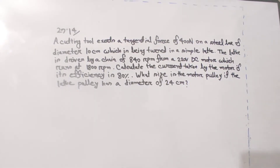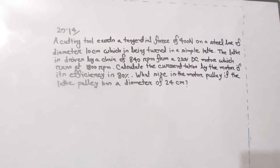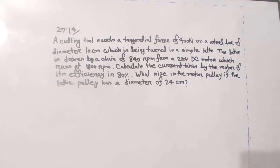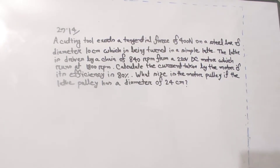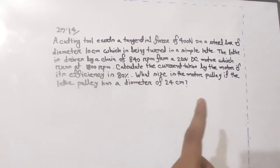What size is the motor pulley if the lathe pulley has a diameter of 24 centimeter? So the general factor is the motor pulley connected to the lathe pulley. The lead machine output — we are looking at the output power of the motor.